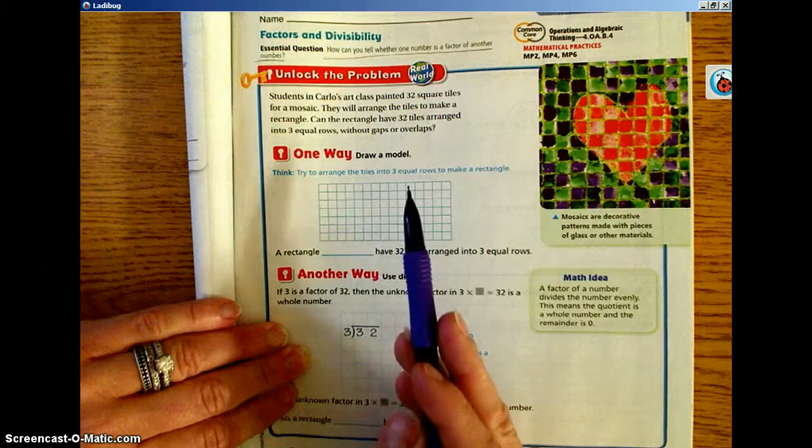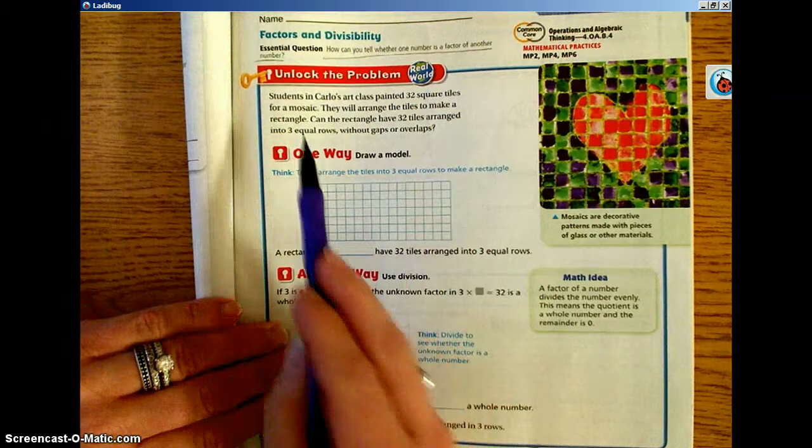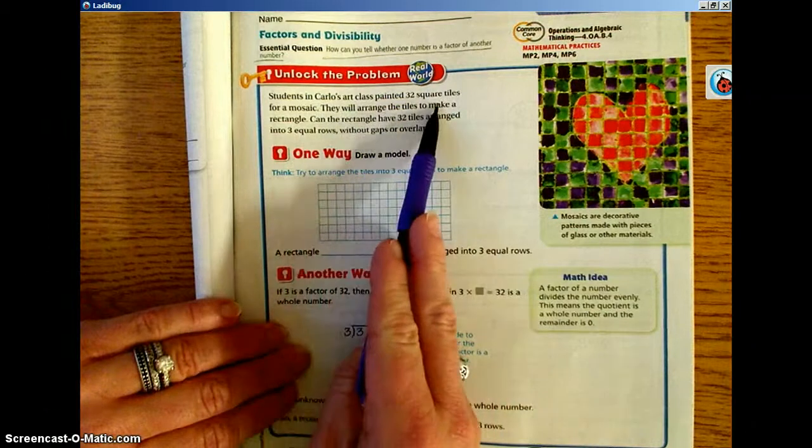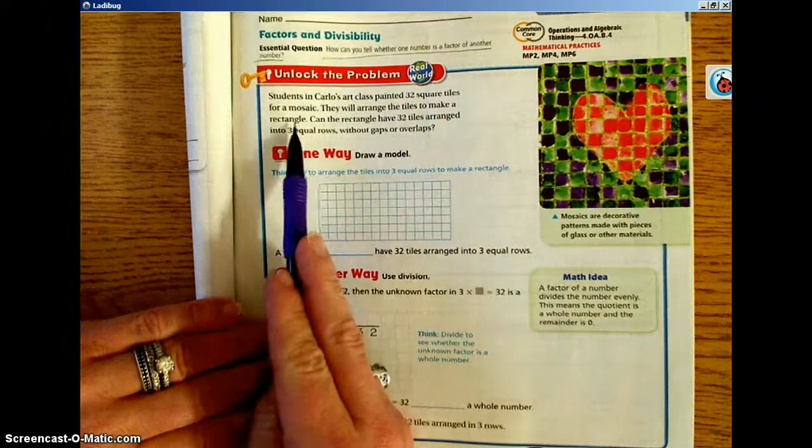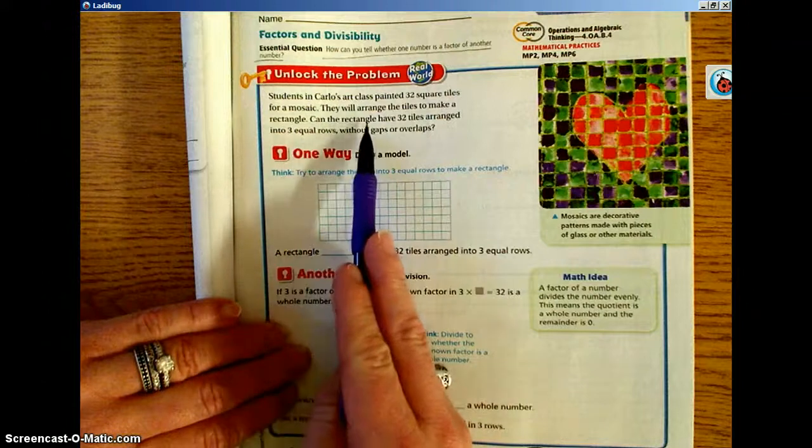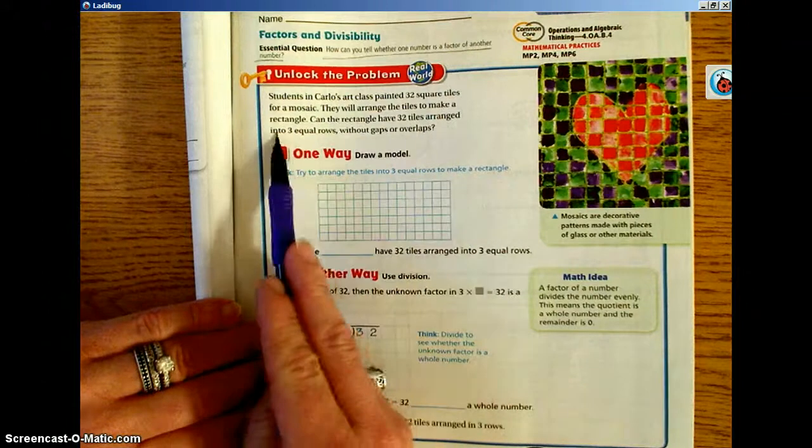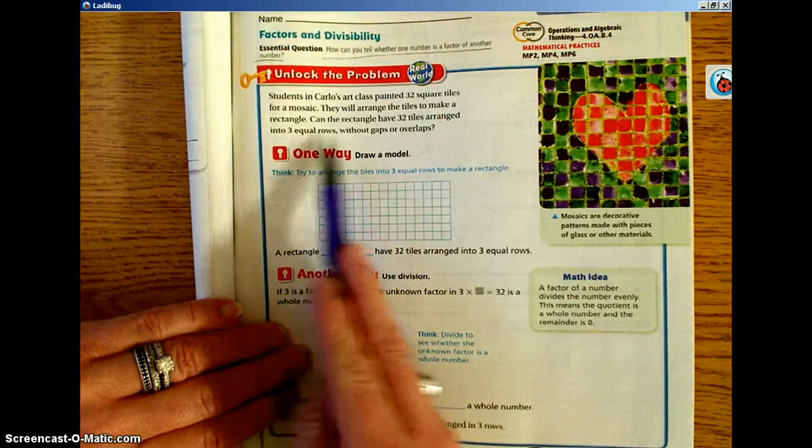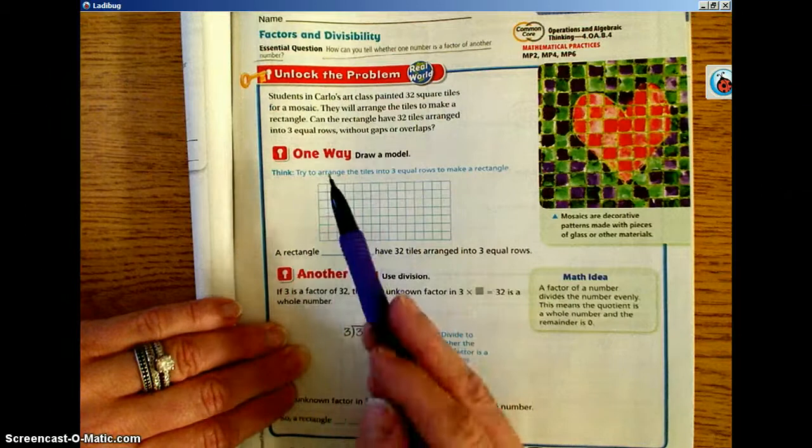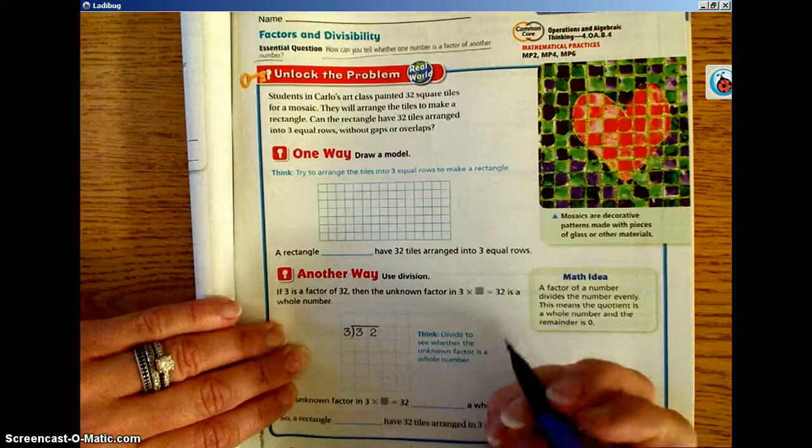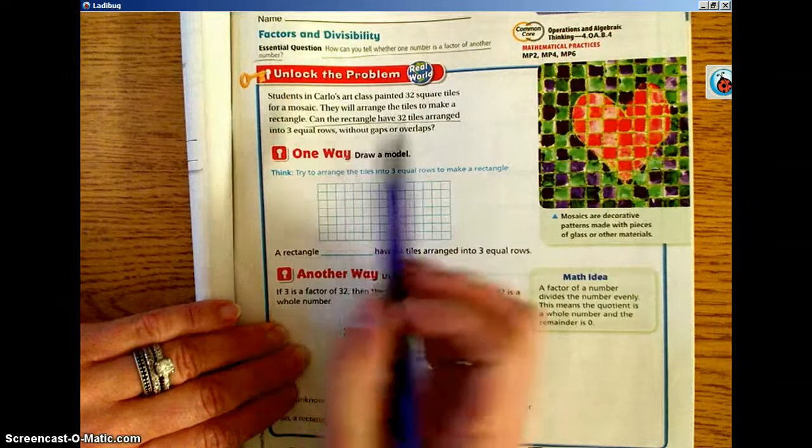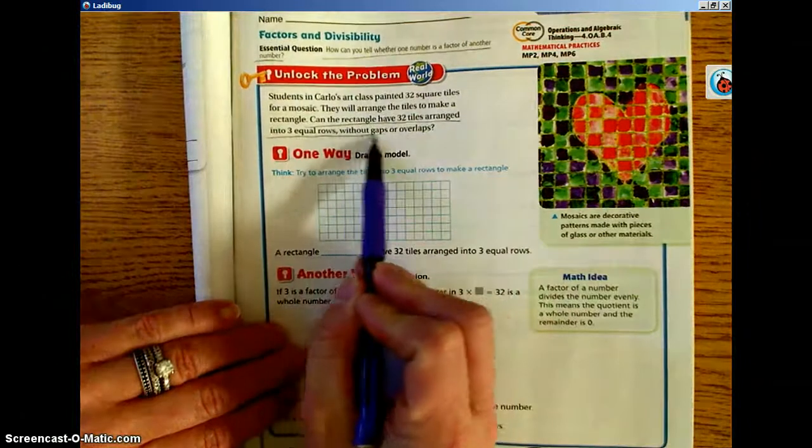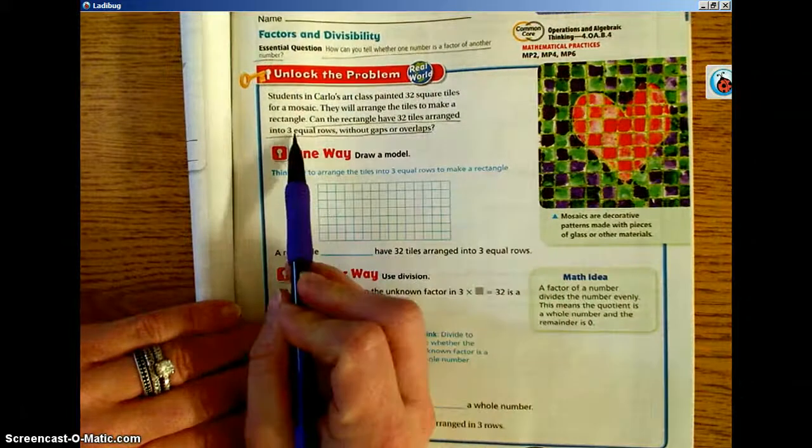If we look down at Unlock the Problem, it says students in Carlos' art class paint 32 square tiles for a mosaic. They will arrange the tiles to make a rectangle. Can the rectangle have 32 tiles arranged into 3 equal rows without gaps or overlaps? We need to underline what we need to find. It wants us to find if a rectangle of 32 tiles can be arranged into 3 equal rows.